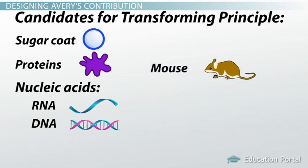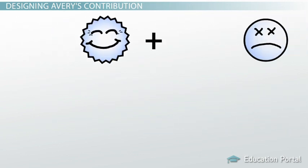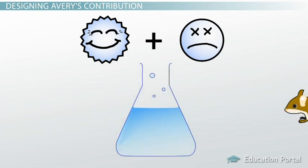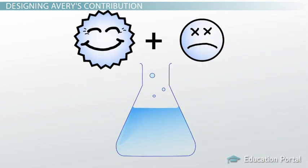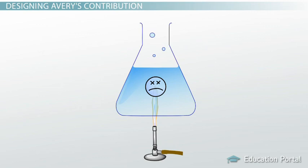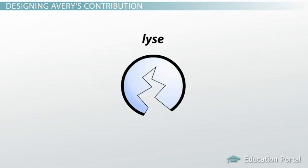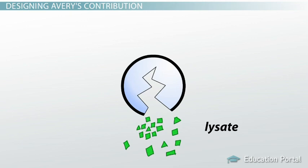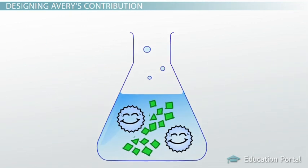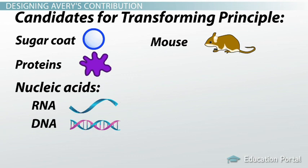So this is what he did. First, he separated the mouse from all the other factors. He wanted to see if transformation could occur if the live R-cells and the dead S-cells were mixed together in a test tube, not inside the mouse. Avery heat-killed the S-cells and then lysed or broke open the cell membranes with detergent. The resulting lysate — a solution of all the cell parts mixed together — was mixed in with the live R-cells. The mixture yielded live S-cells, demonstrating that the transforming principle was something in the lysate, not something in the mouse.